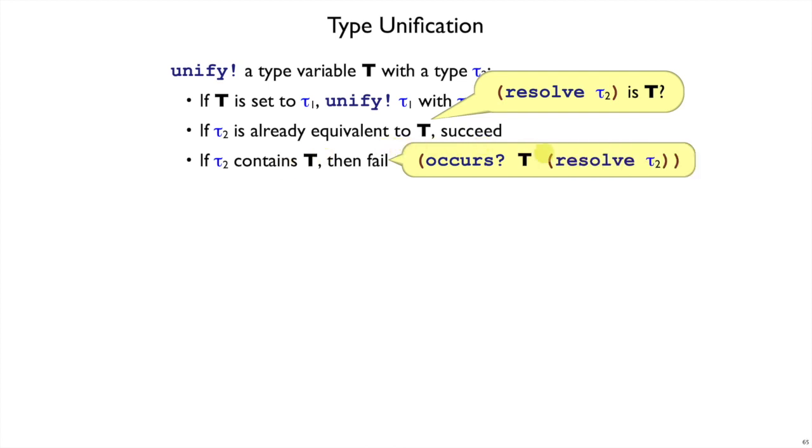And of course, we need to do the occurs check on the resolved tau2, not just tau2, because tau2 again might be a type variable T3 that, if we resolve it, would expose a T inside.